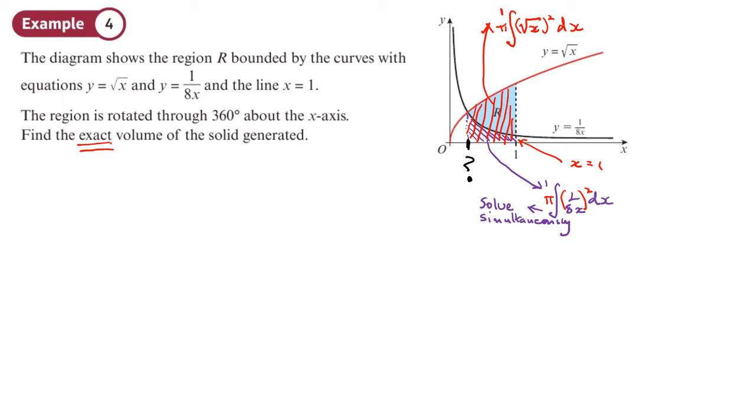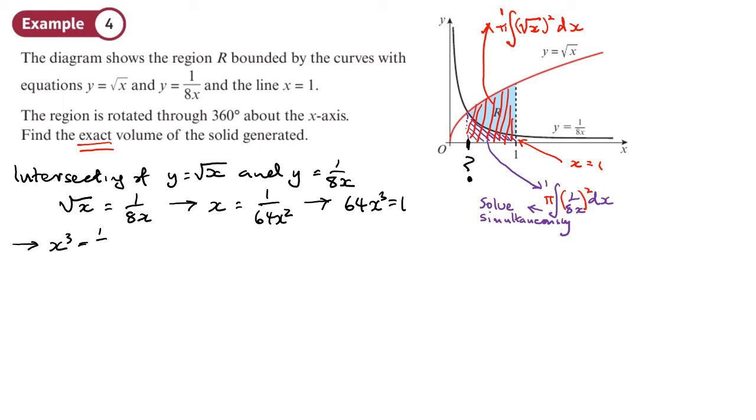I need to find the intersection of √x and 1/8x. Intersection of y = √x and y = 1/8x. So that's going to be √x = 1/8x. We can square both sides. So we get x = 1/64x². We can times both sides by 64x². So we get 64x³ = 1. Then divide both sides by 64, x³ = 1/64. We'll cube root both sides and we'll get x = 1/4. So this is the lower missing limit that I was missing, 1/4 that's going to go in.